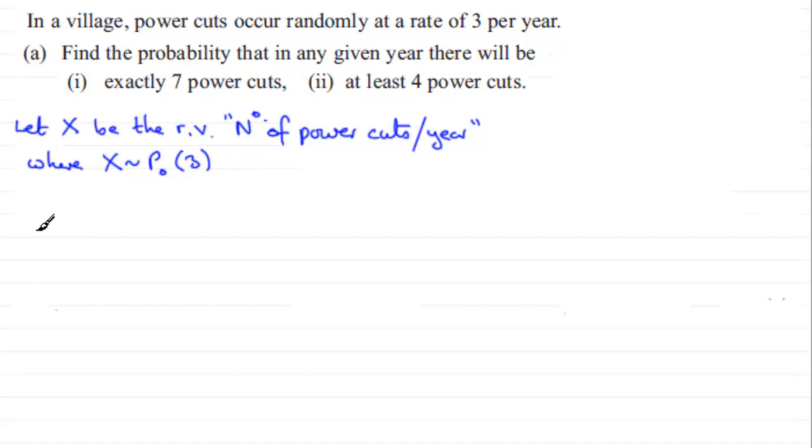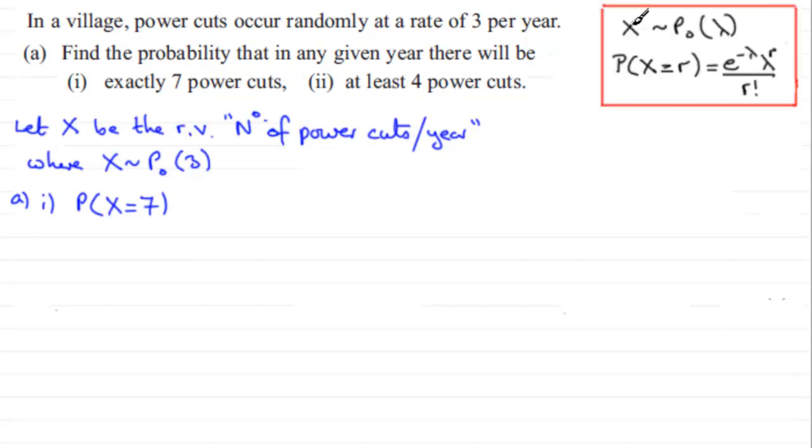So when it comes to working out Part A then, Part 1, the probability of getting exactly 7 power cuts, that's the probability that X equals 7. And there's two ways that we can do this. One is directly through the formula. You should be familiar with this.